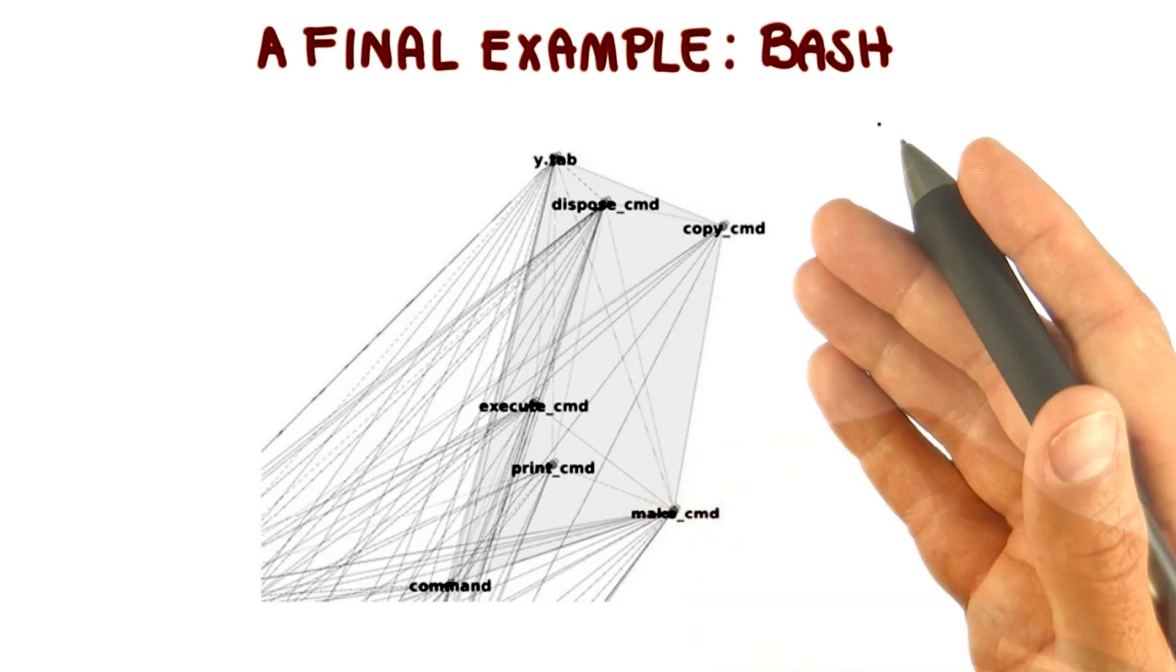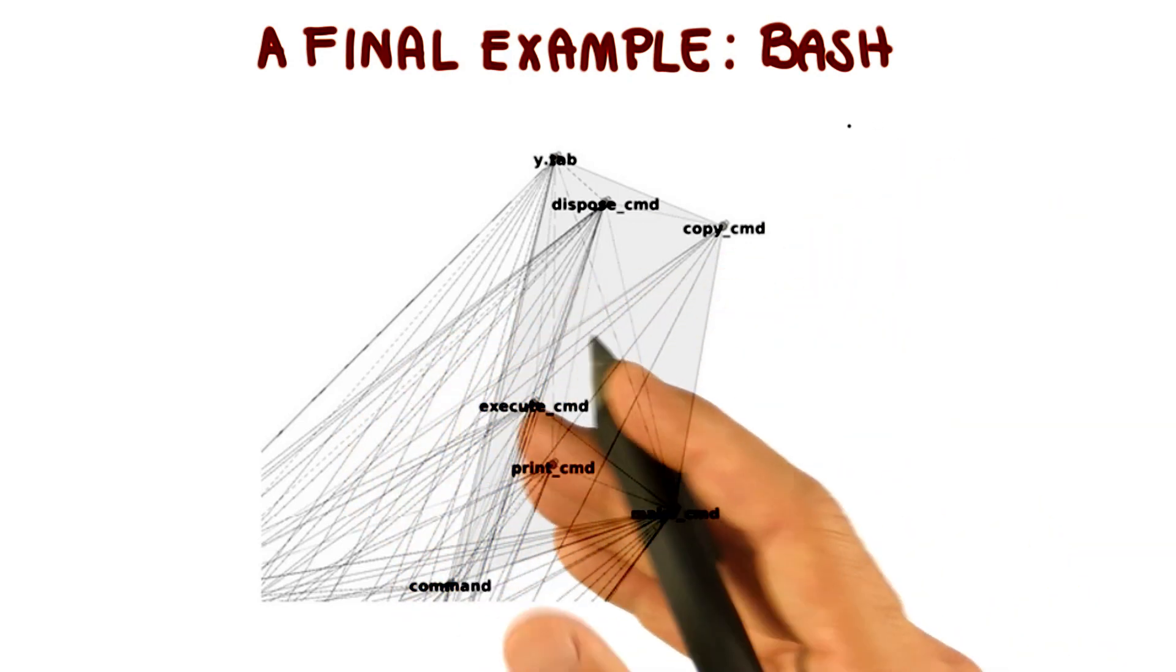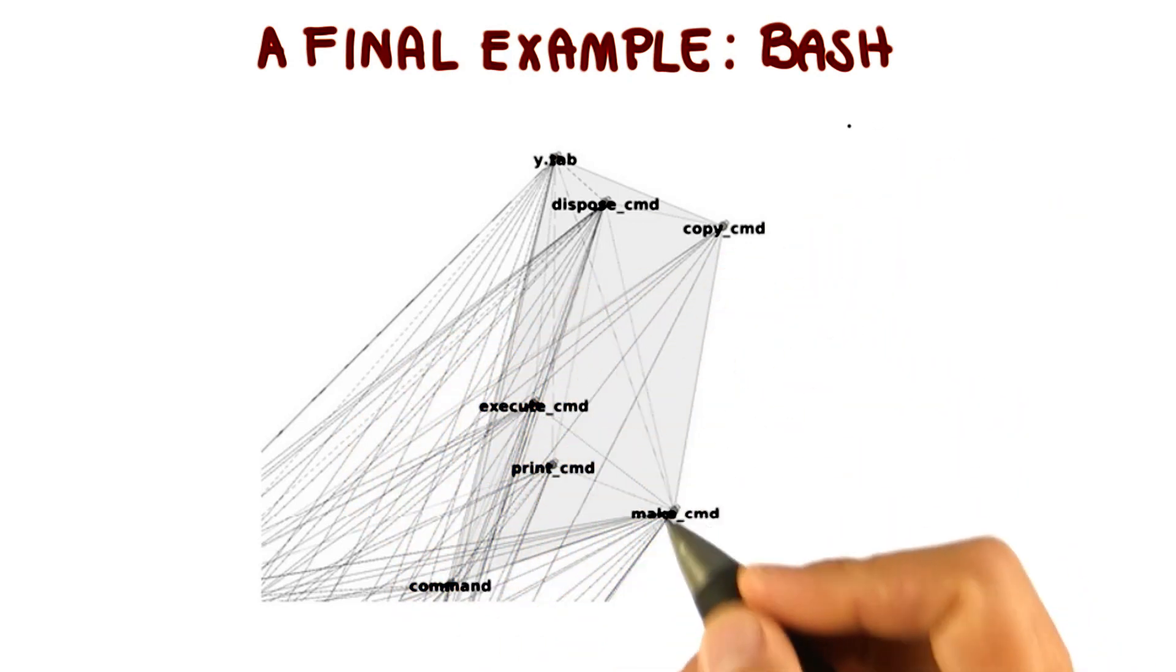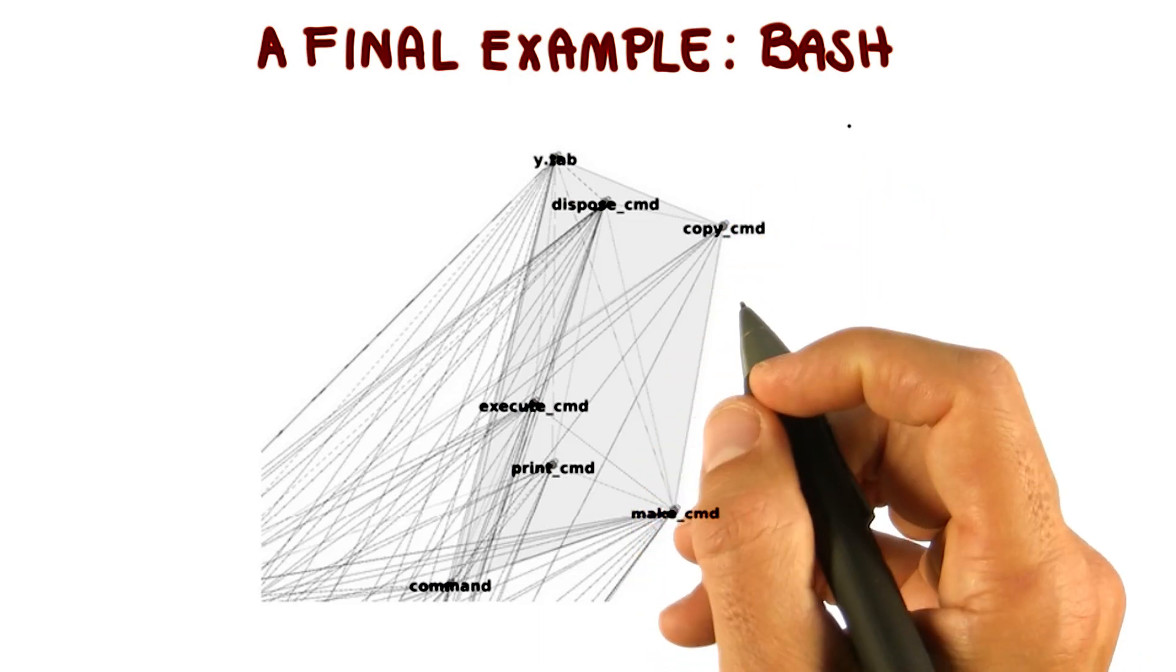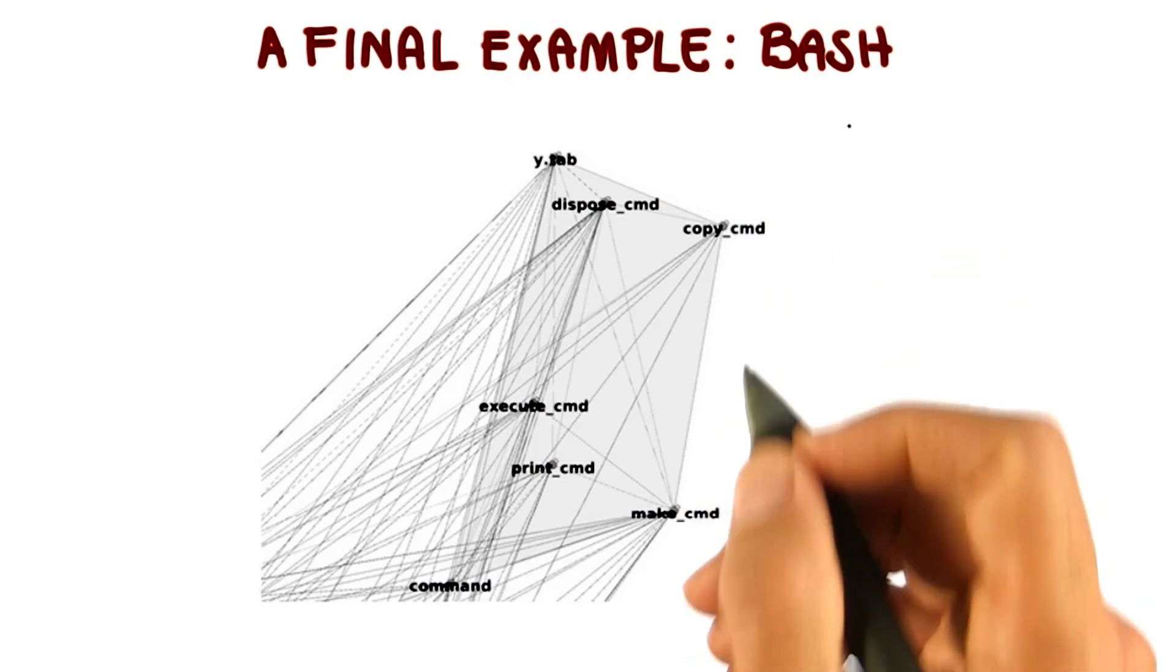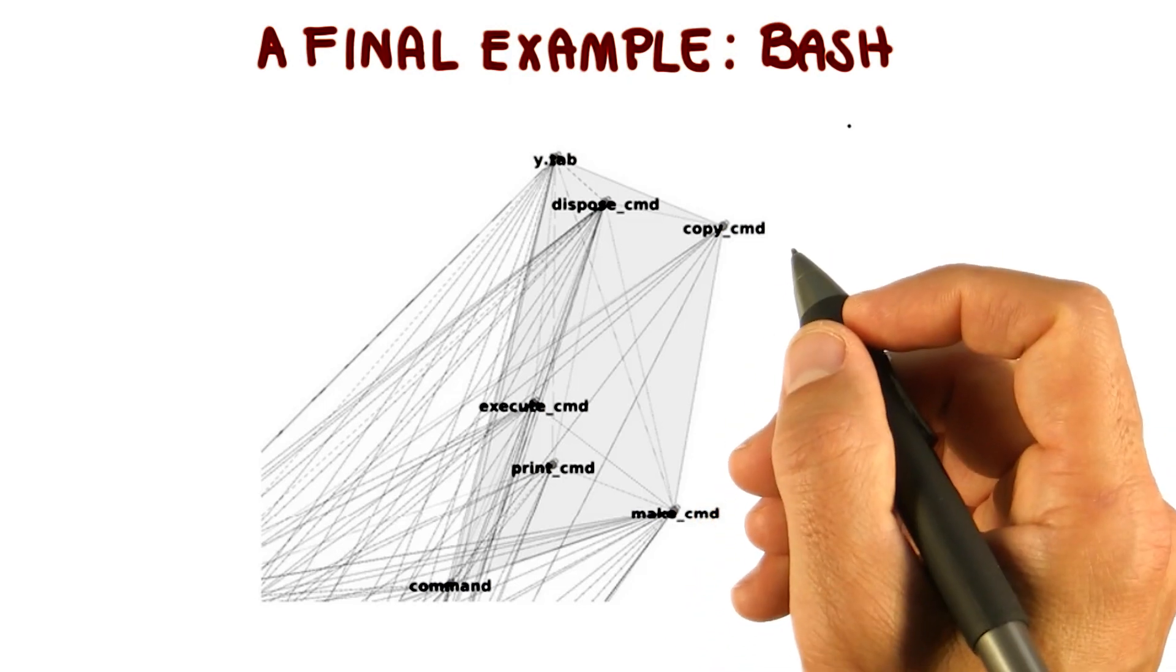And one important point here is that with all these examples, I'm not really trying to criticize any specific system. What I'm trying to show instead is how complex software architectures can be and how much they can degrade over time. And this is true for most systems, not just the ones that I showed you.